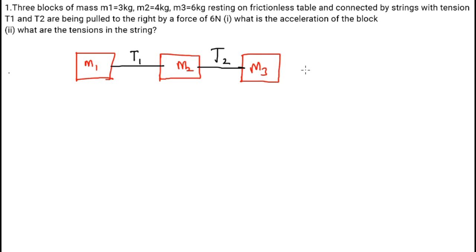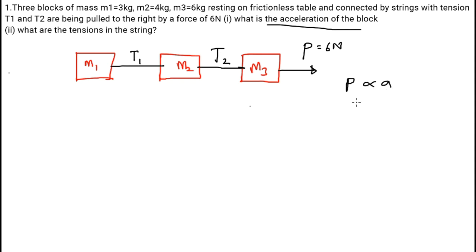The pulling force P is towards the right and is given as 6 Newton. The first problem is to find the acceleration of the block. According to Newton's second law of motion, the applied force is proportional to the acceleration. If an applied force of 6 Newton is given to this system of three objects at the same time, it will produce a particular acceleration that will be constant for all the masses.